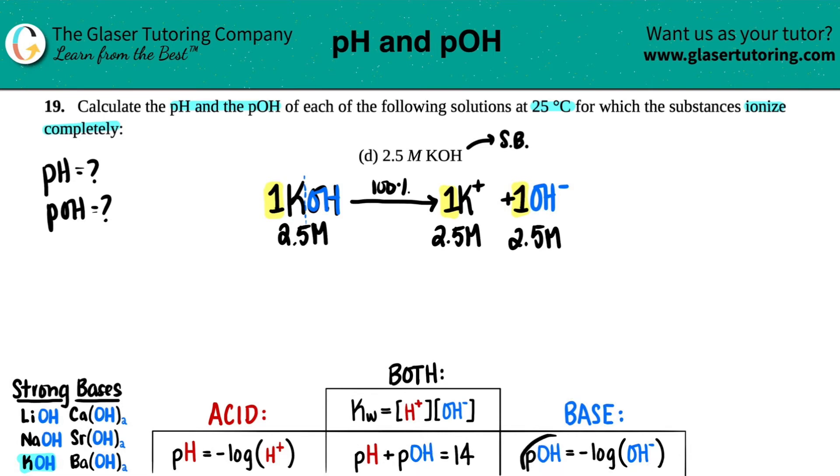But I can find out the pOH first because it's always the negative log of the hydroxide. And that's the only number that I care about, is that the hydroxide was equal to the 2.5 molarity. In essence, we don't even care about these, but we need to write it down just so that we make sure that we have the right number for the hydroxide.